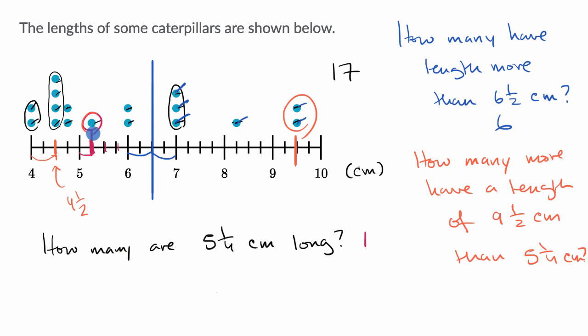We already know that one of them has a length of five and one-fourth, so how many more have nine and a half centimeters versus five and one-fourth? That would be two minus one, or one more. We have one more caterpillar with a length of nine and a half centimeters than we do with five and one-fourth.